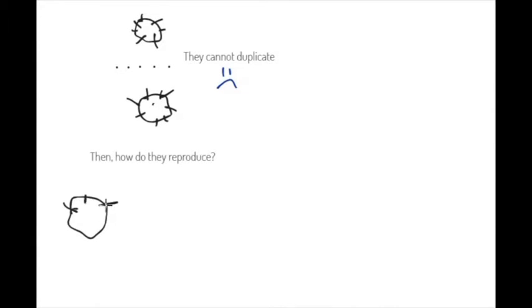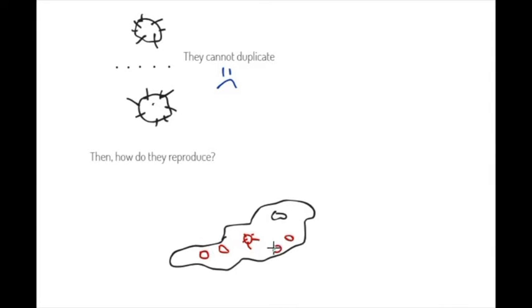But then how do they reproduce? Let's have a look at this virus. If it was to duplicate, it will need to find a cell like this one here. And once it is inside, it can start reproducing and making new viruses inside of the cell.